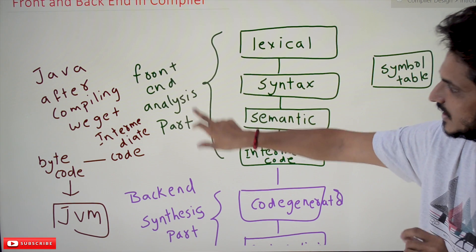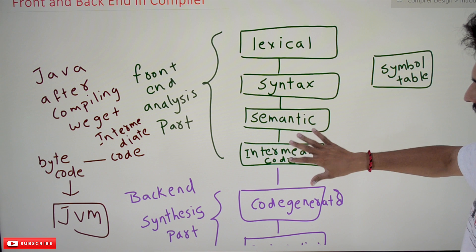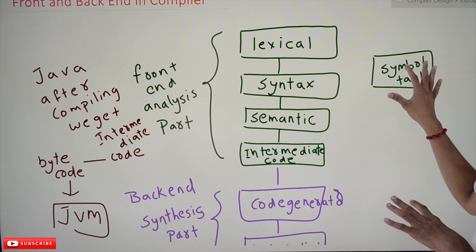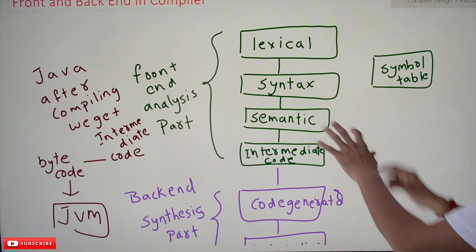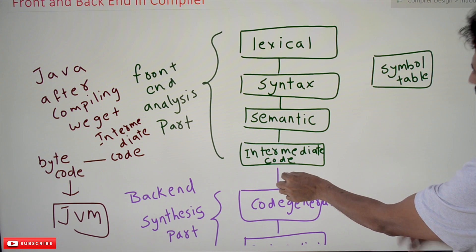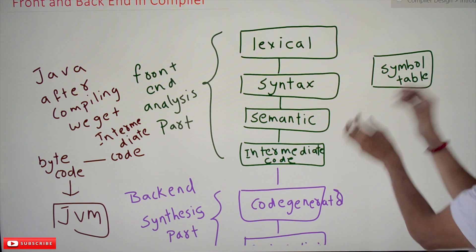In this phase, it generates the symbol table. Combining these two—whatever output it has generated here and the symbol table—is sent to the code generator.